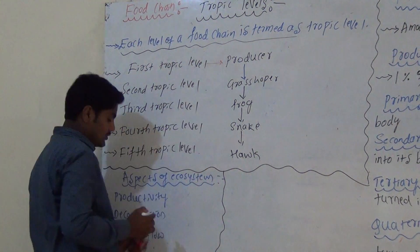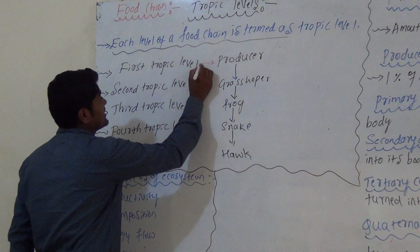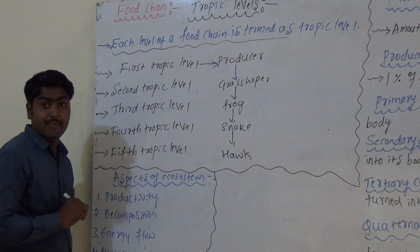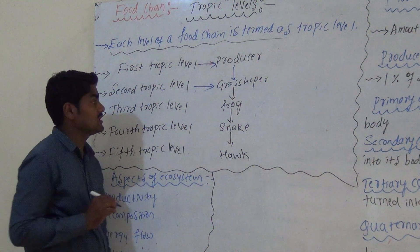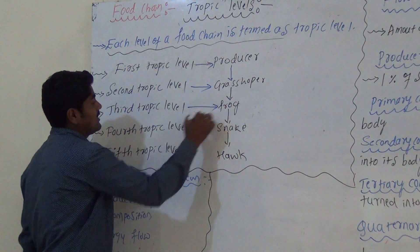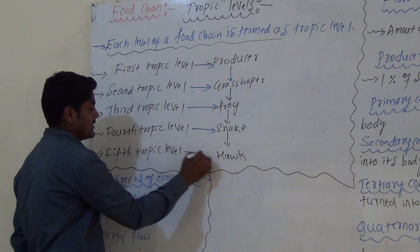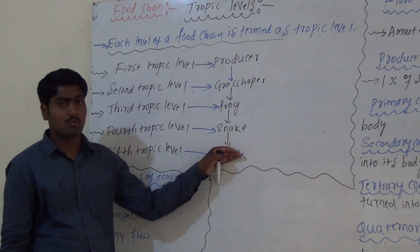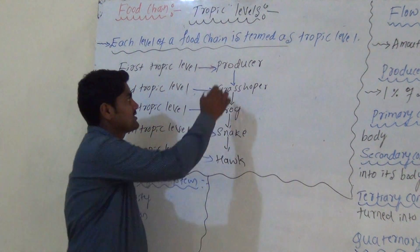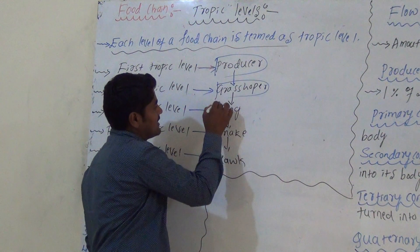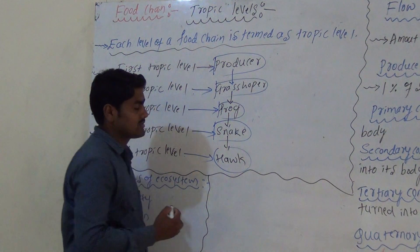The producer comes under the first Trophic Level. The second Trophic Level is the grasshopper, which is the primary consumer. The third Trophic Level is the frog. The fourth Trophic Level is the snake, and the fifth Trophic Level is the hawk. These are all the Trophic Levels.